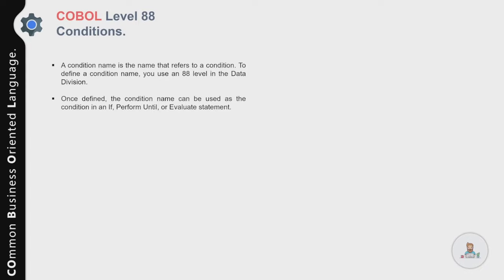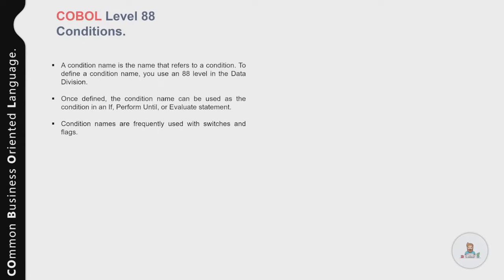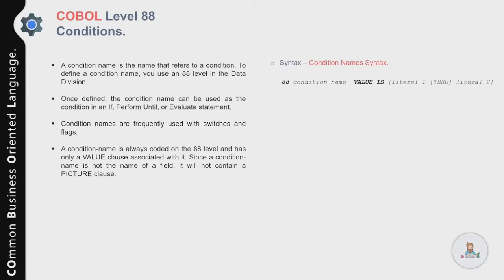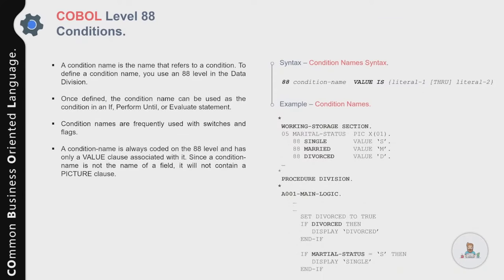Now let's talk about level-88 conditions and how you can use them in your COBOL program. A condition name is the name that refers to a condition. To define a condition, you use level 88 in the Data Division. After defining the condition name, it can be used as the condition in IF, PERFORM UNTIL, or EVALUATE statements. Condition names are frequently used with switches and flags. A condition name is coded at level 88 with only a value clause — since it is not the name of a field, it has no picture clause.